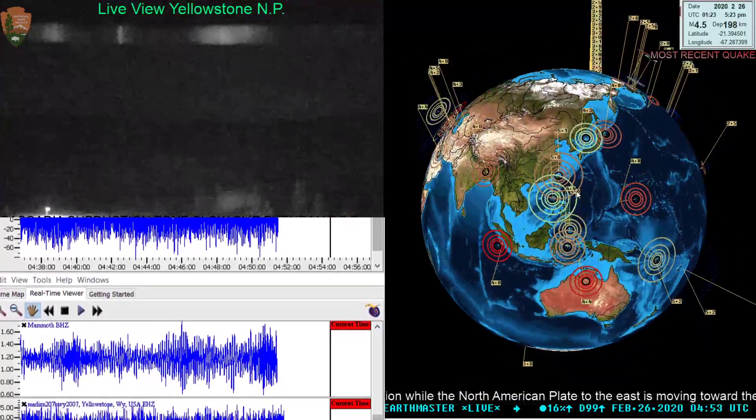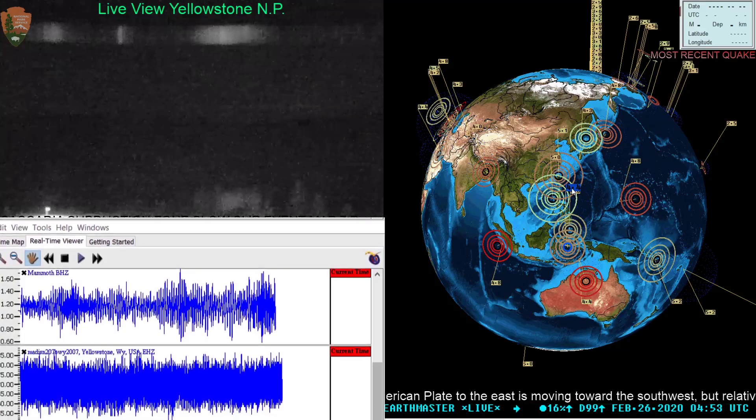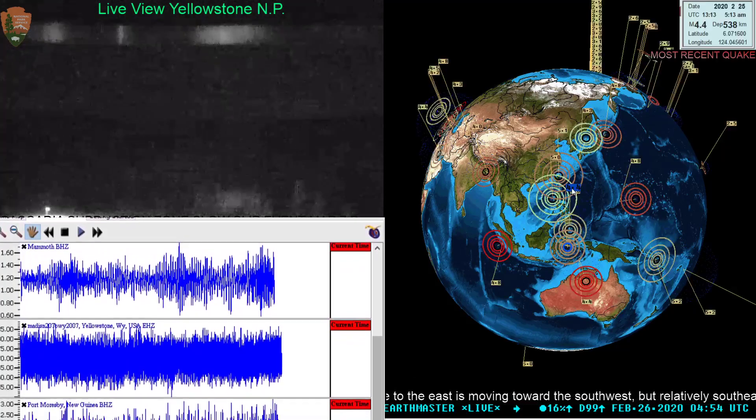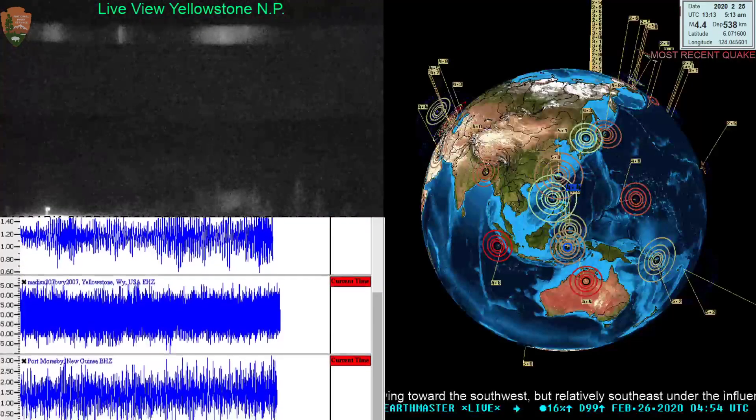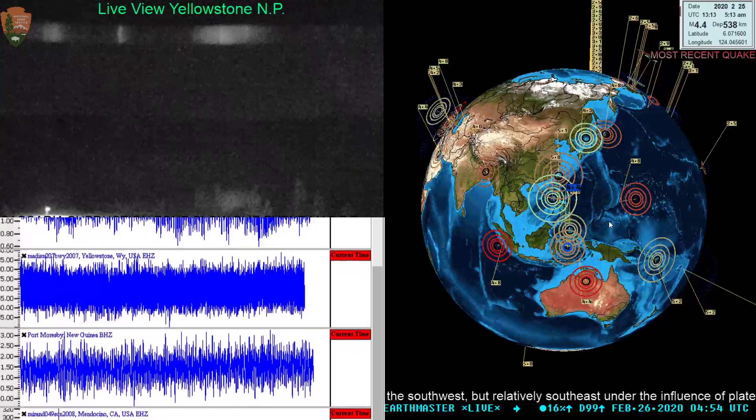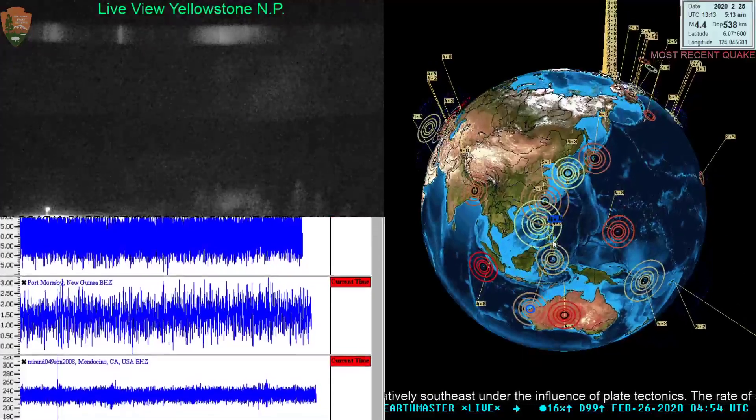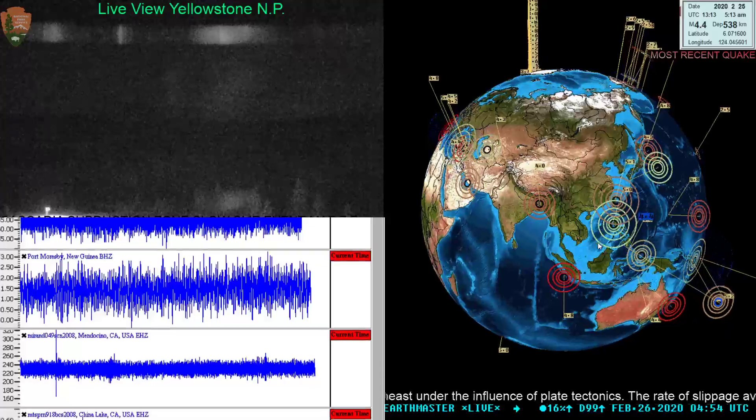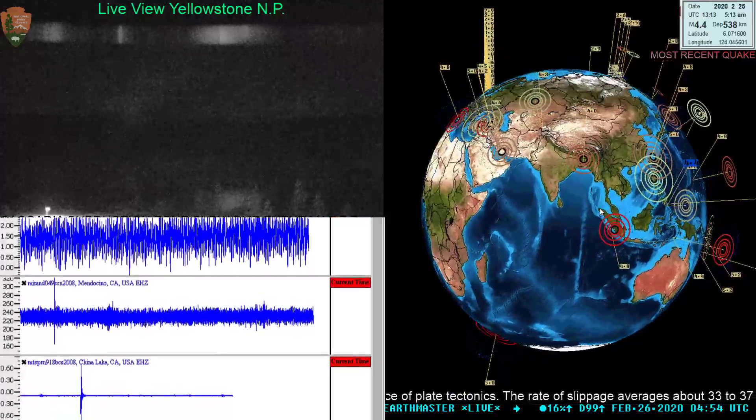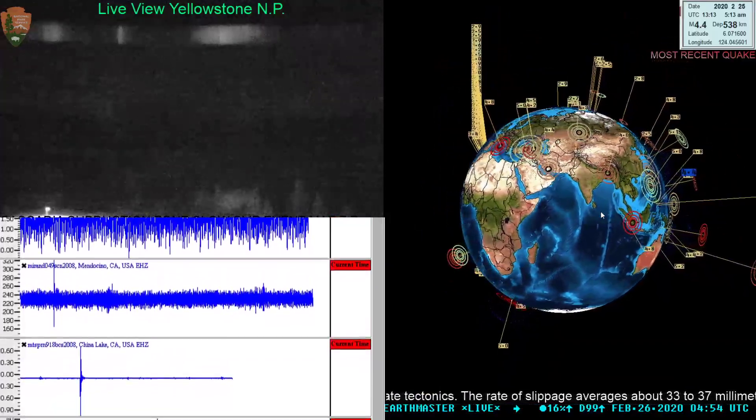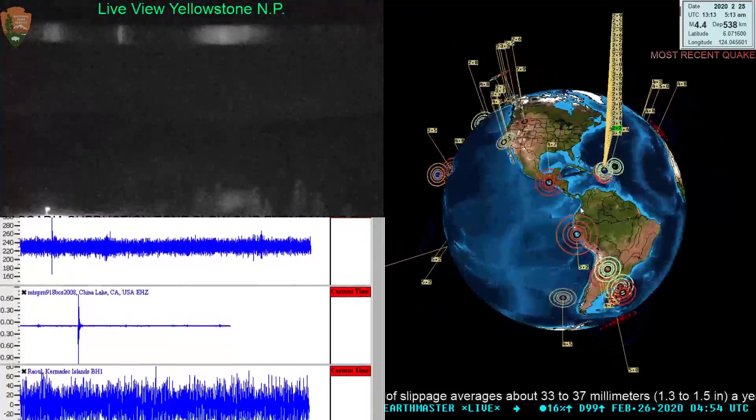And deeper earthquake activity over here on the western part of the Pacific Ring of Fire as well. A 5.2 in Fiji and a super deep one. 4.4 at 538 kilometers below the surface. That's pretty deep, folks. Some activity occurring, taking shape. I haven't really seen any major quakes in the larger magnitude range. But it can change. Right now some stuff is going on out there in the deep part of the earth that might be setting the stage up for those larger quakes in the future.